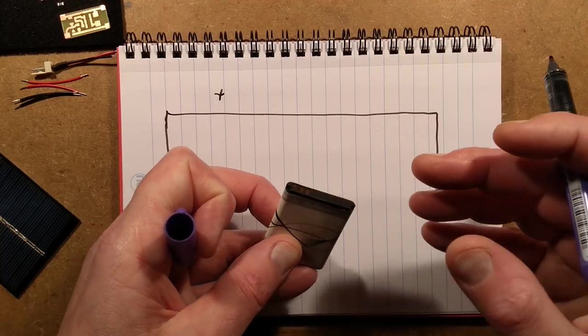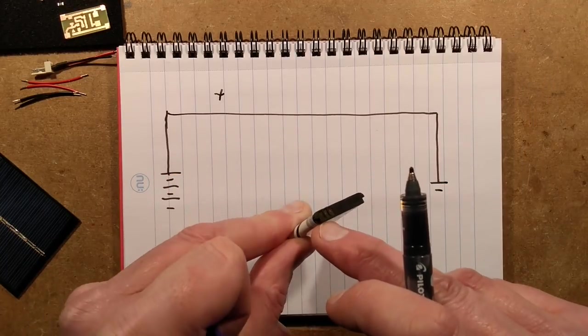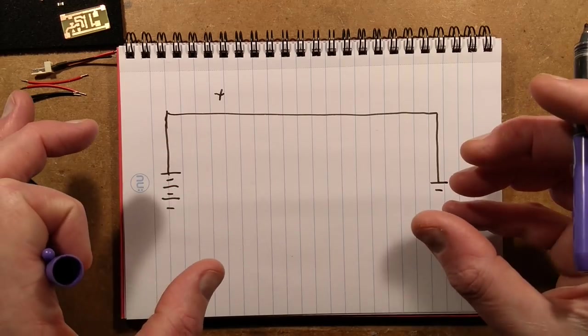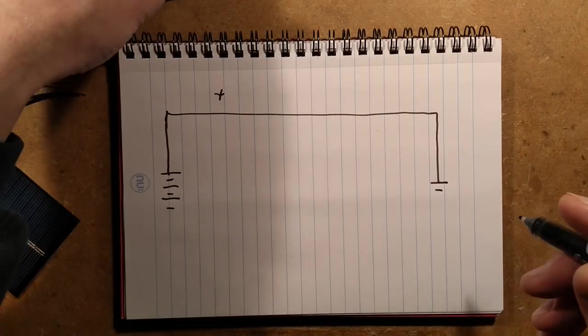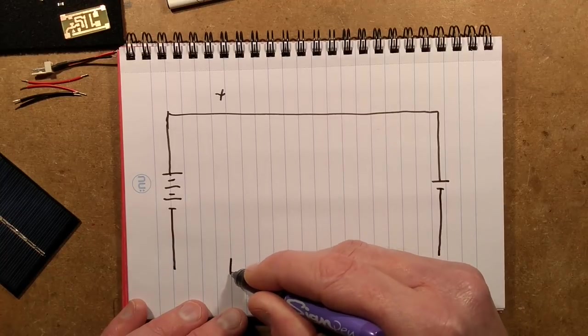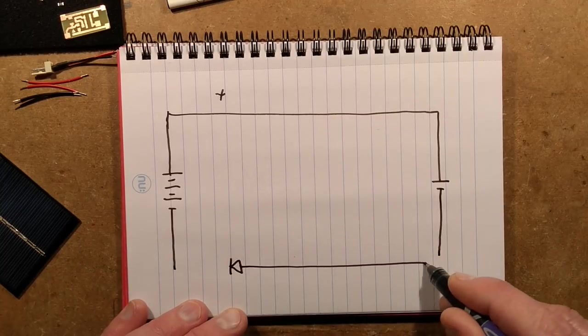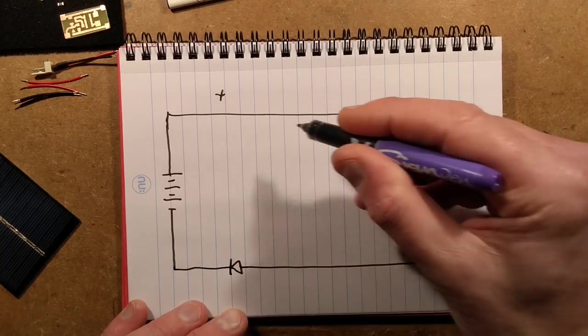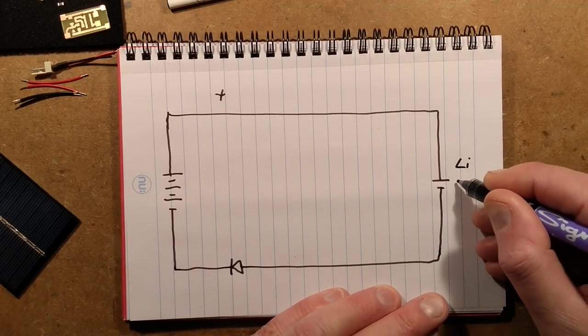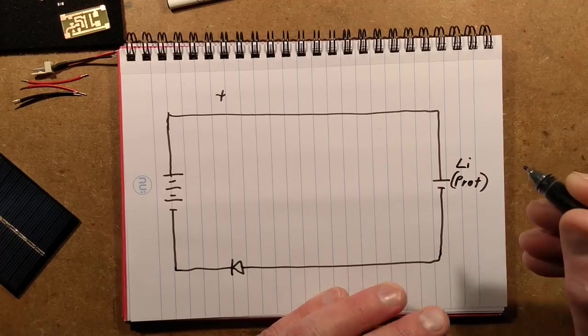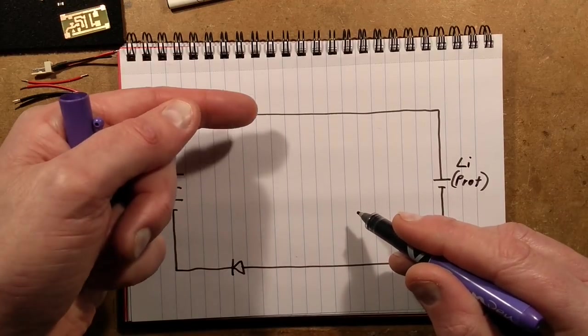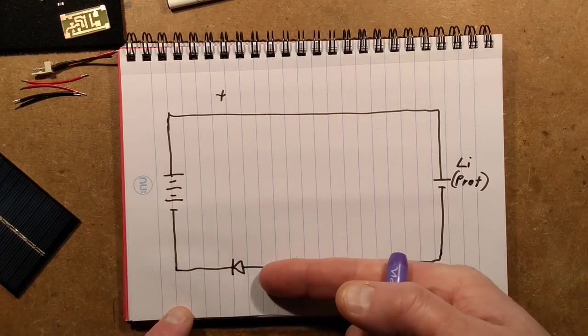Here's the solar panel going across to the other end of the circuit which is the lithium cell. Now the lithium cell I'm going to be using is a phone lithium cell that usually has protection in it. So this then goes down here and it goes back to the solar panel but there's a diode. In this case it's useful to have the diode in this part of the circuit.